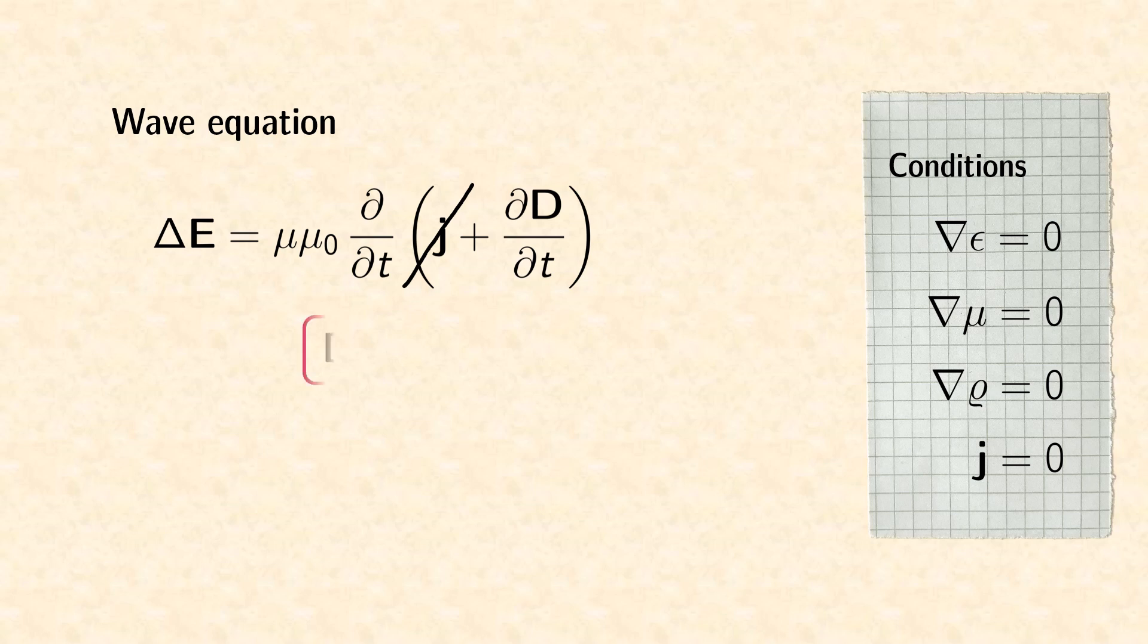Finally, we replace the displacement field by the electric field, which almost completes the wave equation. Our last step is a rearrangement of the factors in order to simplify the equation.